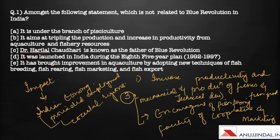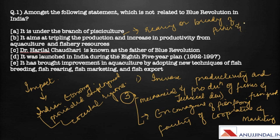The first statement says Blue Revolution is under the branch of pisciculture — the study of rearing or breeding of fishes and marine culture — which is correct since pisciculture is related to fishes. The second statement says it aims at tripling production and increasing productivity from aquaculture and fishery resources, which is also absolutely correct.